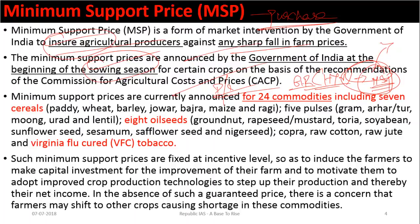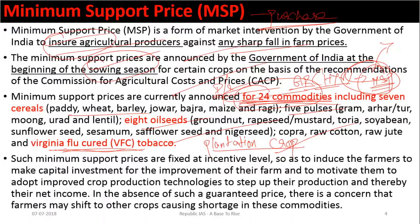Currently MSP is announced for nearly 24 commodities, including paddy (rice), wheat, barley, jowar, bajra, maize, ragi, pulses, oil seeds, copra, tobacco (Virginia tobacco), and raw jute. Please note that plantation crops such as tea, coffee, and rubber are NOT covered under MSP. This was tested in a UPSC Prelims question — if coffee appeared as an option, you could eliminate it to get the correct answer.